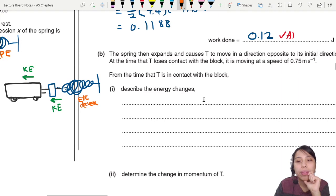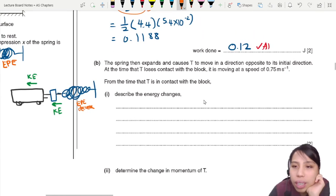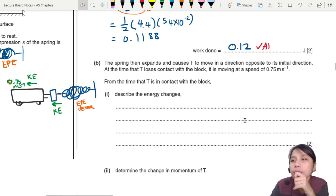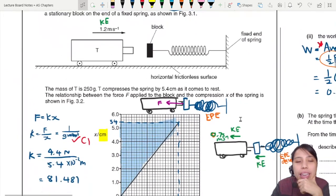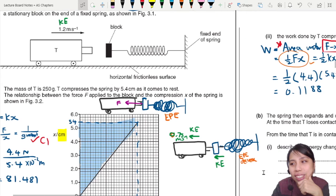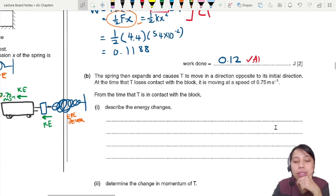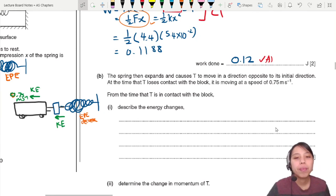Now this will start to have kinetic energy, and this block will also start to have kinetic energy while the EPE decreases. Your block T is moving at a speed of 0.75 meters per second. That's actually lower than the original 1.2, but now when they move away it's only 0.75. Where did the energy go? This fellow also got energy - there are two kinetic energies now but only one originally.